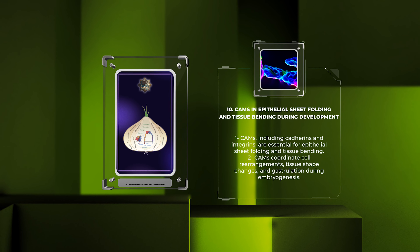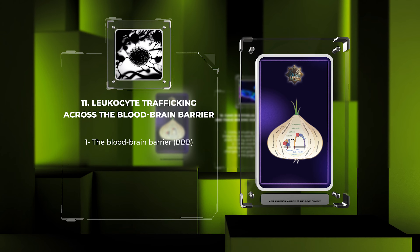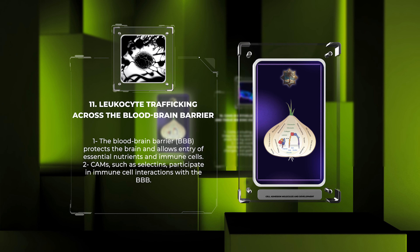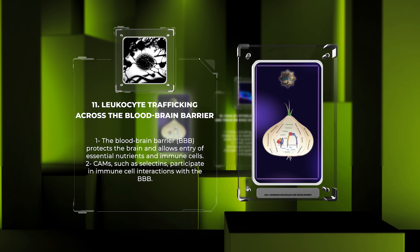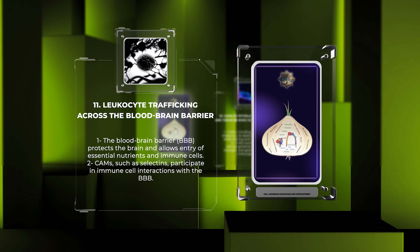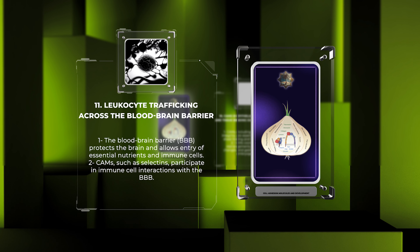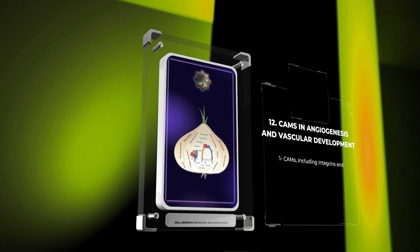The blood-brain barrier (BBB) is a highly selective interface that protects the brain from harmful substances while allowing the entry of essential nutrients and immune cells when necessary. CAMs such as selectins participate in immune cell interactions with the BBB, mediating tethering and rolling of leukocytes on the brain endothelium, guiding them across the BBB and into the brain under inflammatory conditions.